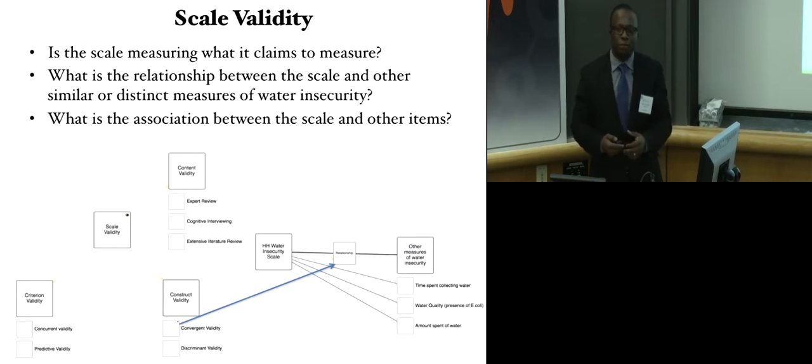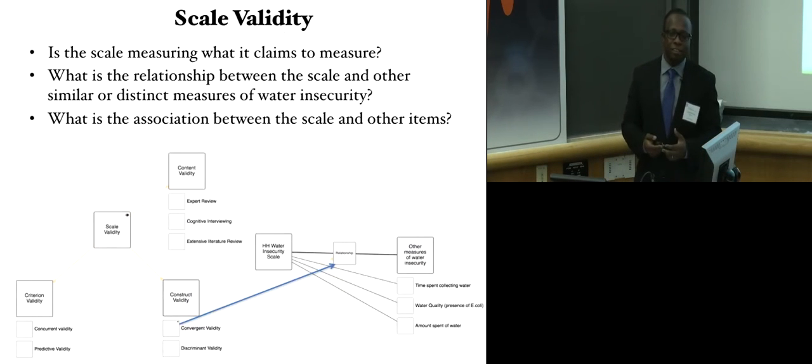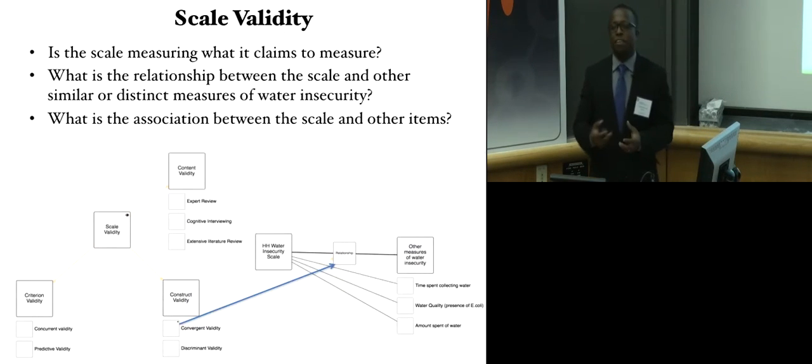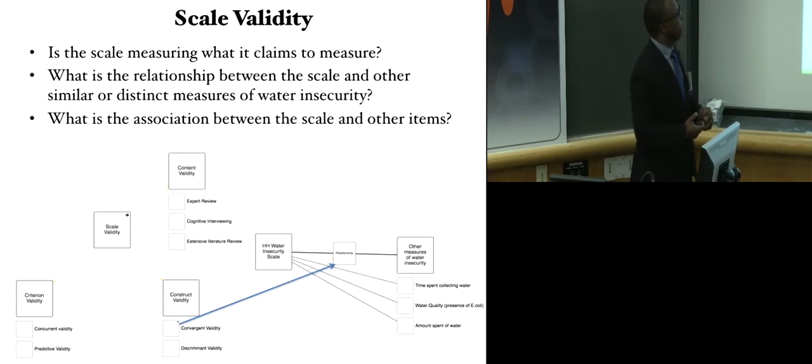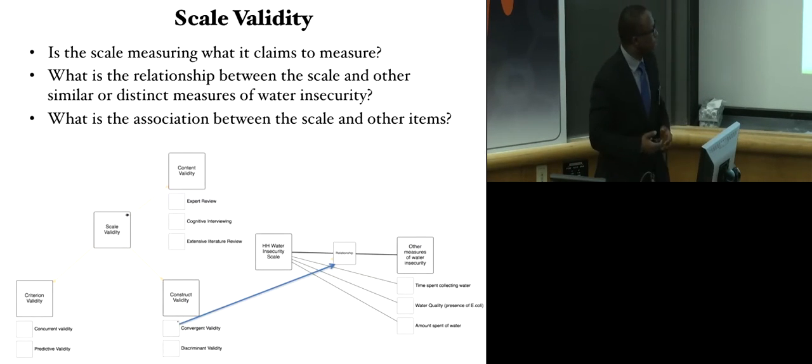Then next to it, we have the test of validity. Within scale construction, there are different perspectives when it comes to testing for validity. One has to do with content validity, that was done at the onset of the study when the items were being developed. But the other has to do with construct validity.